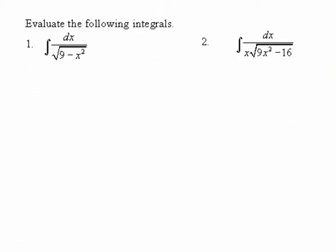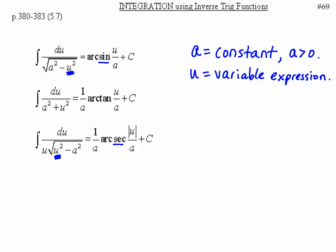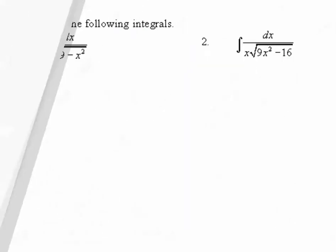Make yourself a note: these formulas must be memorized — add three more to your memorization list. Why only three and not arc cosine, arc cotangent, and arc cosecant? Remember, when we took the derivatives of those, they differed only by a factor of negative one, so they are essentially the same thing.